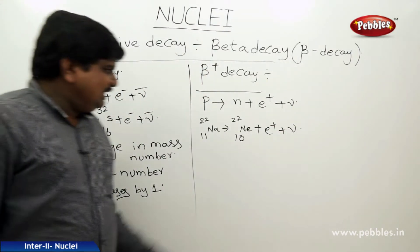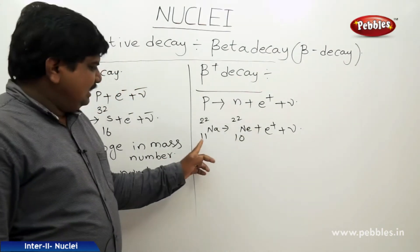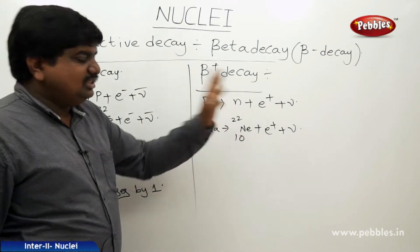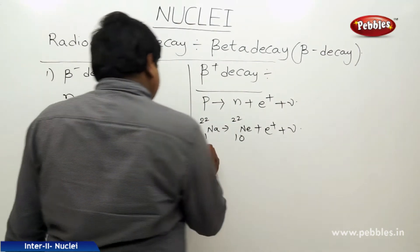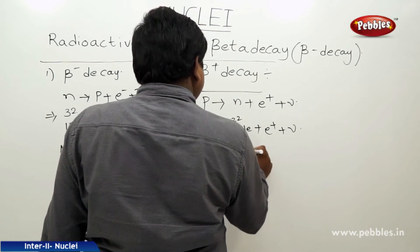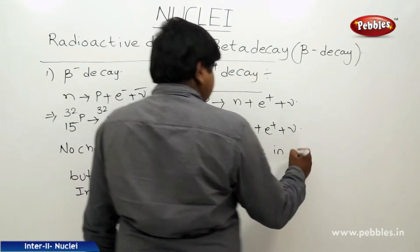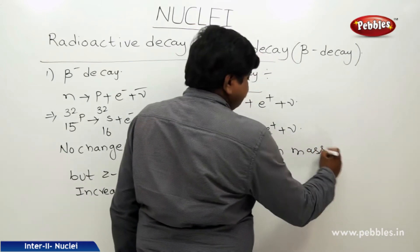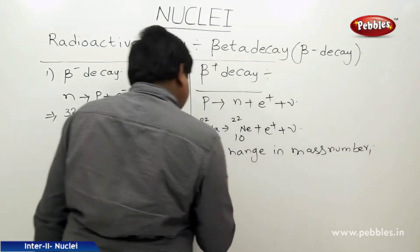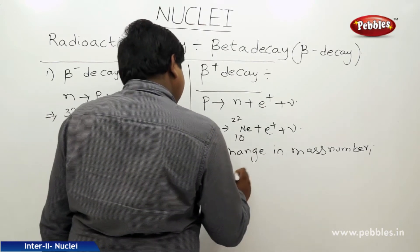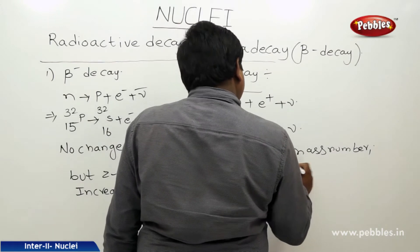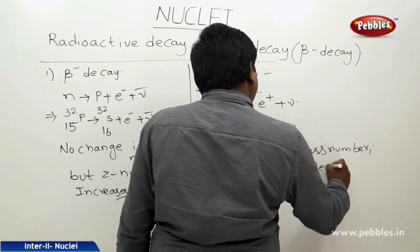While emitting the positron in beta plus decay, the atomic number decreases by 1, but there is no change in the mass number.